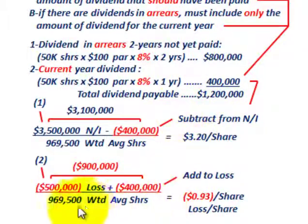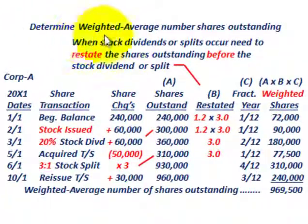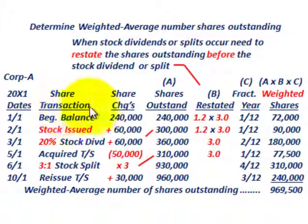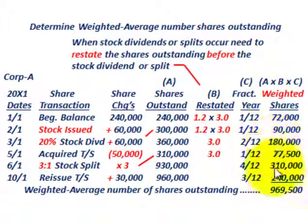Now let's look at how to calculate the weighted average shares outstanding used in the EPS calculation. You set up a table with dates of share transactions during the year. Based on those transactions, you determine share changes and shares outstanding. You then restate shares for any stock splits or stock dividends, determine the fraction of the year for each period, and calculate weighted average shares.